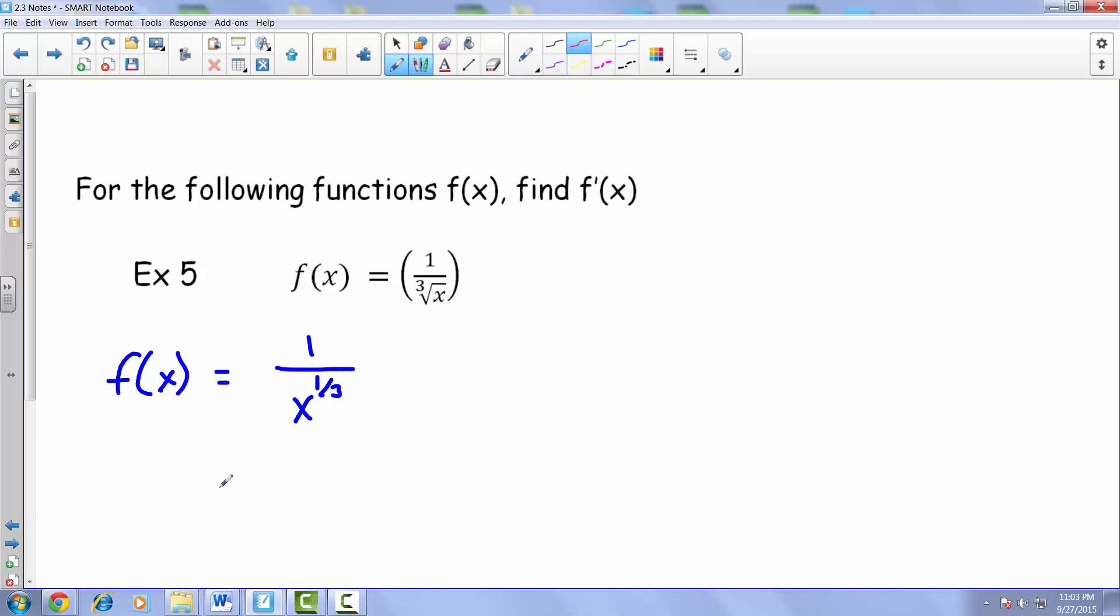Now we can rewrite this as well, bringing this guy up to the top and changing that exponent to a negative. The reason why we would do that is so that we can use that power property that we've seen with derivatives. So right now f of x is equal to x raised to the negative 1 third power.